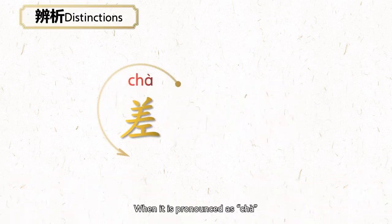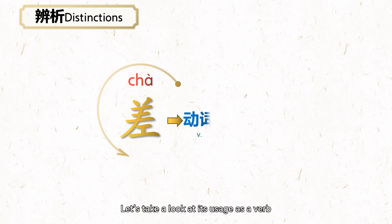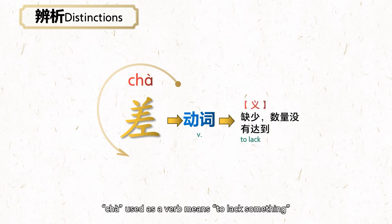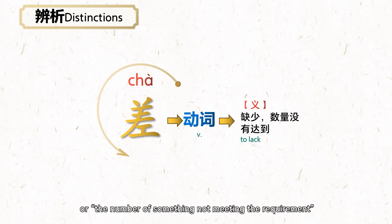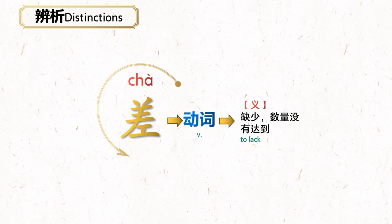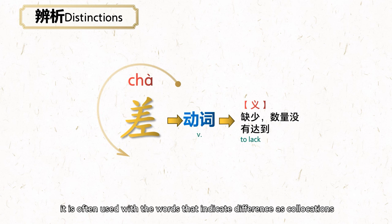When it is pronounced as chà, it serves as a verb as well as an adjective. Let's take a look at its usage as a verb. Chà used as a verb means to lack something or the number of something not meeting the requirement. In this case, it is often used with the words that indicate difference, as collocations.